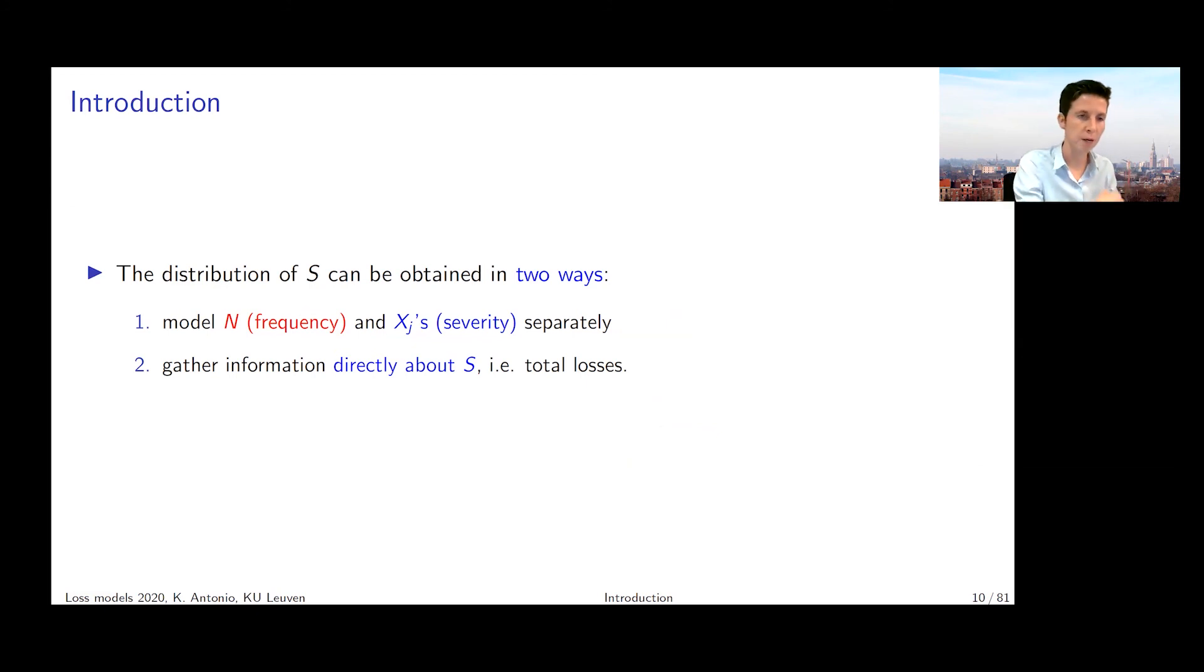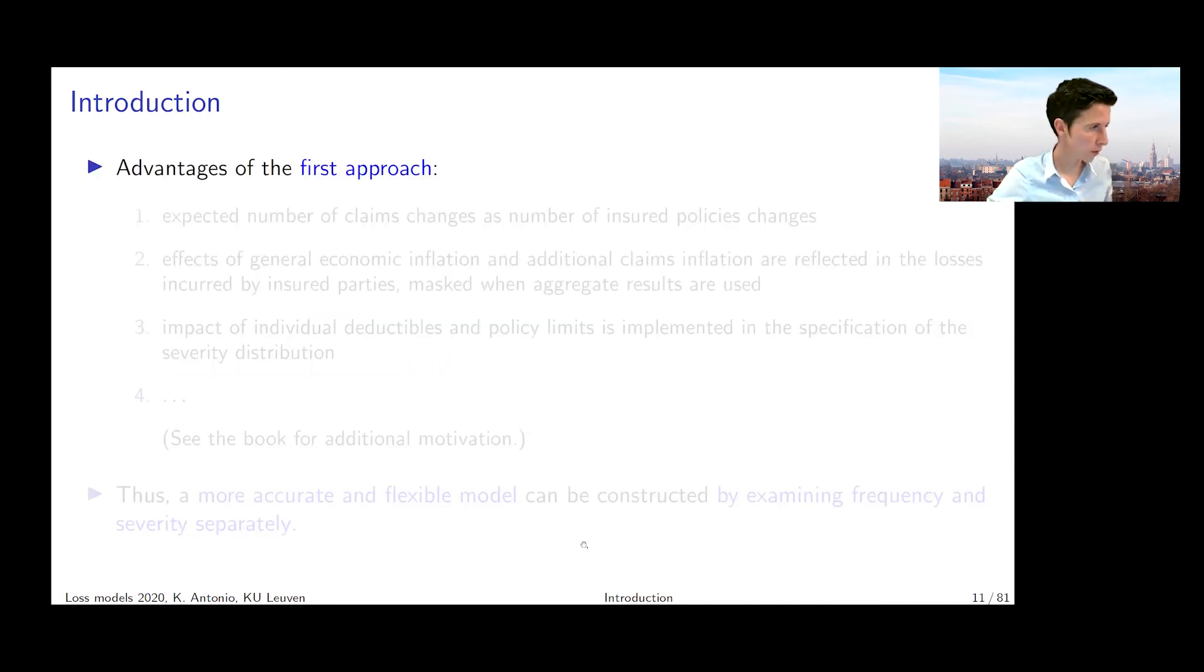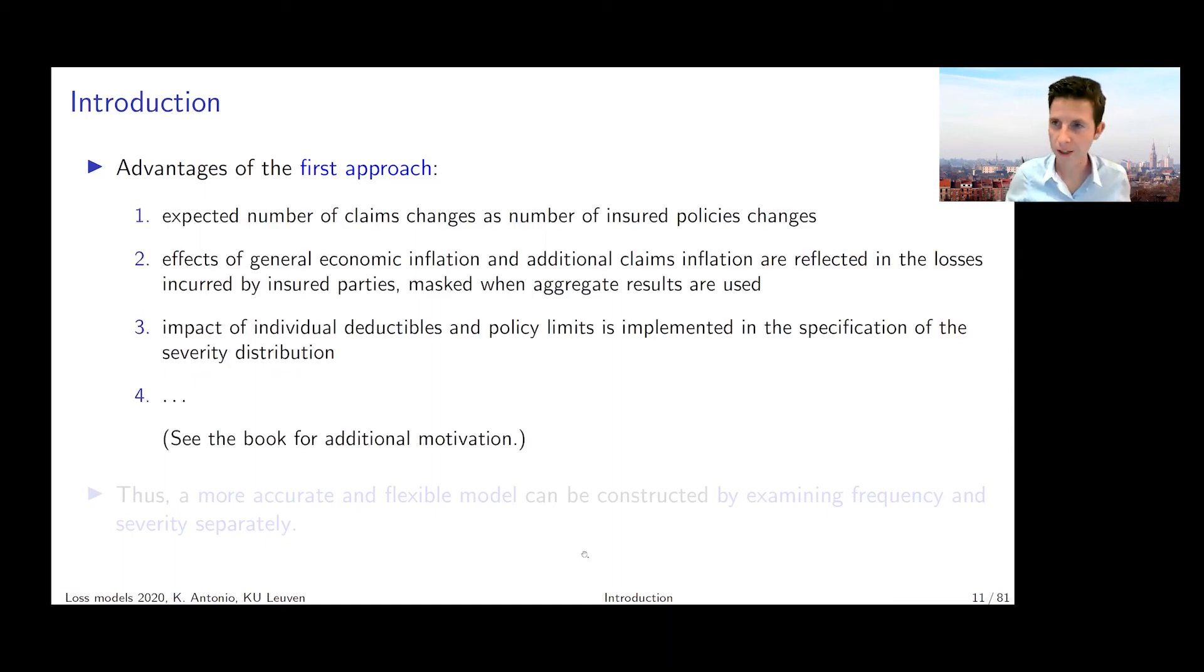If you look at the discussion in the book, the authors give multiple reasons. They say, for instance, if you would impose a deductible or if you would impose policy limits at the level of the individual losses, then if you just collect your information at the aggregate level, it would not be clear how you can see the impact of imposing this deductible or policy limit at the individual losses.